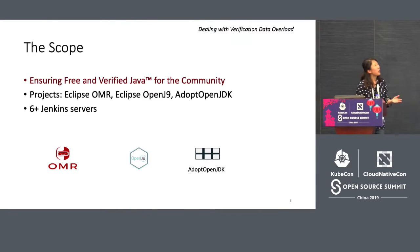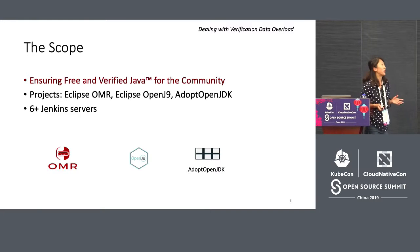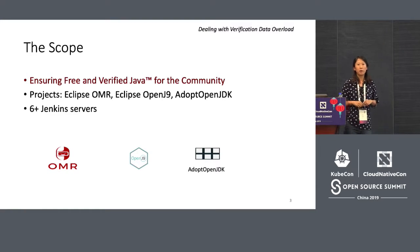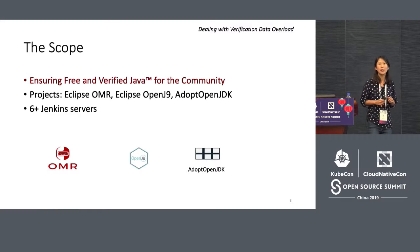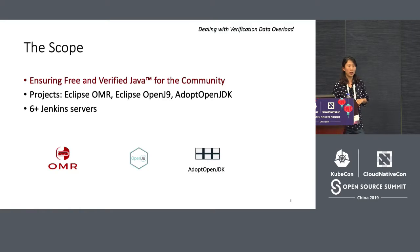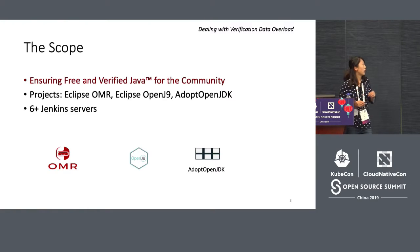我們是誰呢？我們是一群人，要確保社區當中能夠有自由和可驗證的Java。我們用三個不同的開源項目：Eclipse OMR、Eclipse OpenJ9，還有AdoptOpenJDK。今天我們會講一下我們在OpenJDK裡面的工作流。